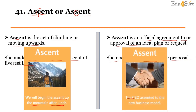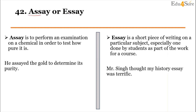Another example: 'The CEO assented to the new business model,' meaning the CEO approved the new business model. Now, to remember the difference between both of these words, note that ascent (with C) relates to climbing, while assent (with S) relates to agreement.